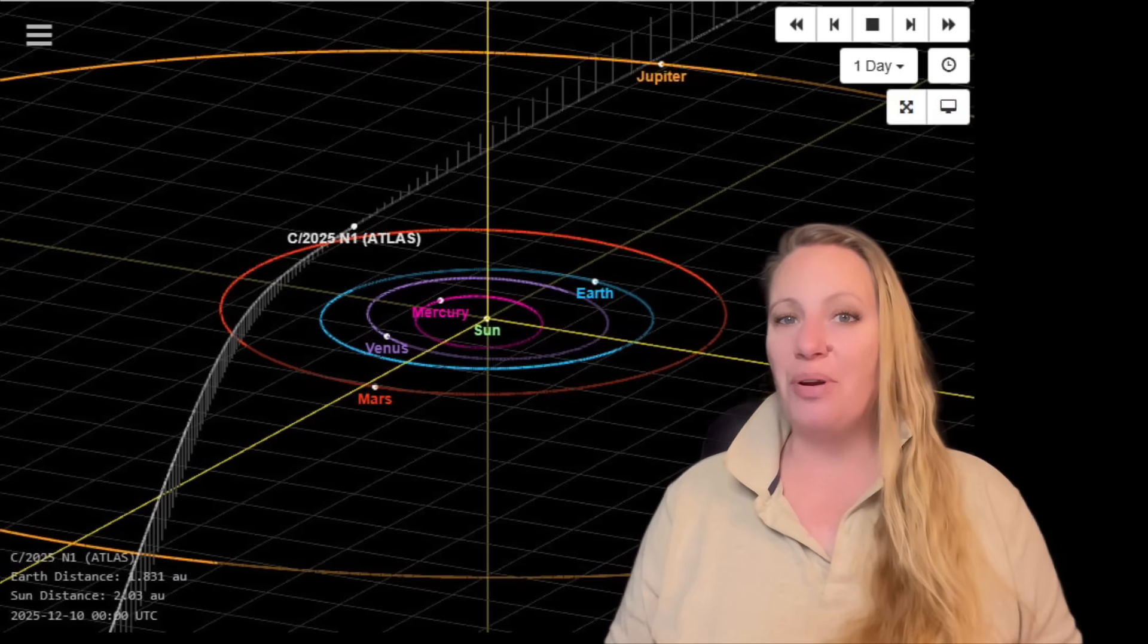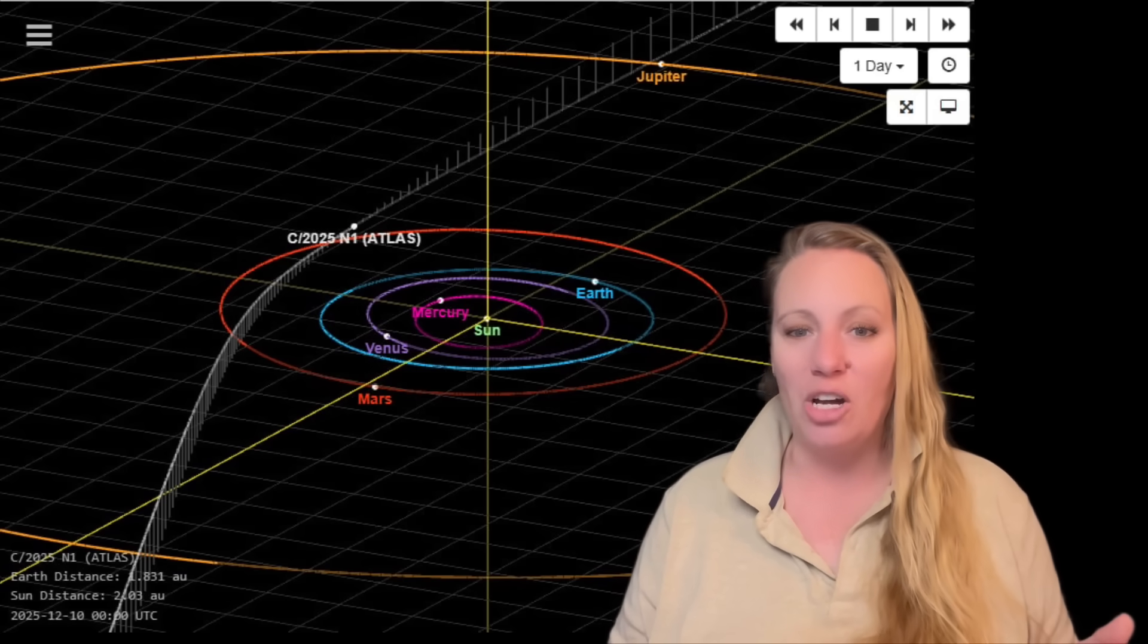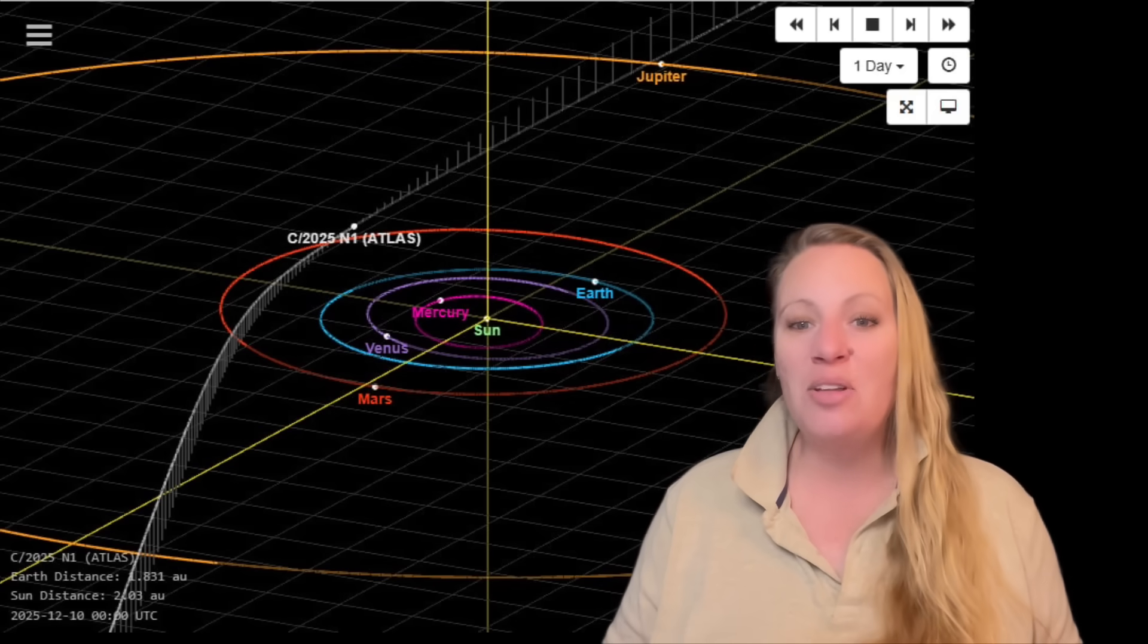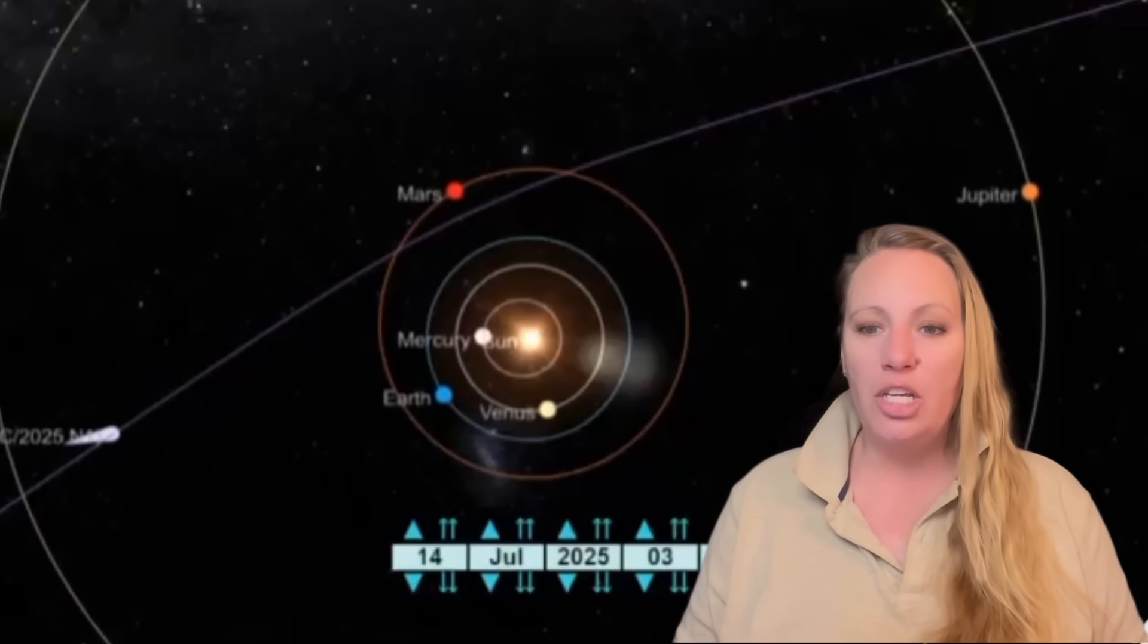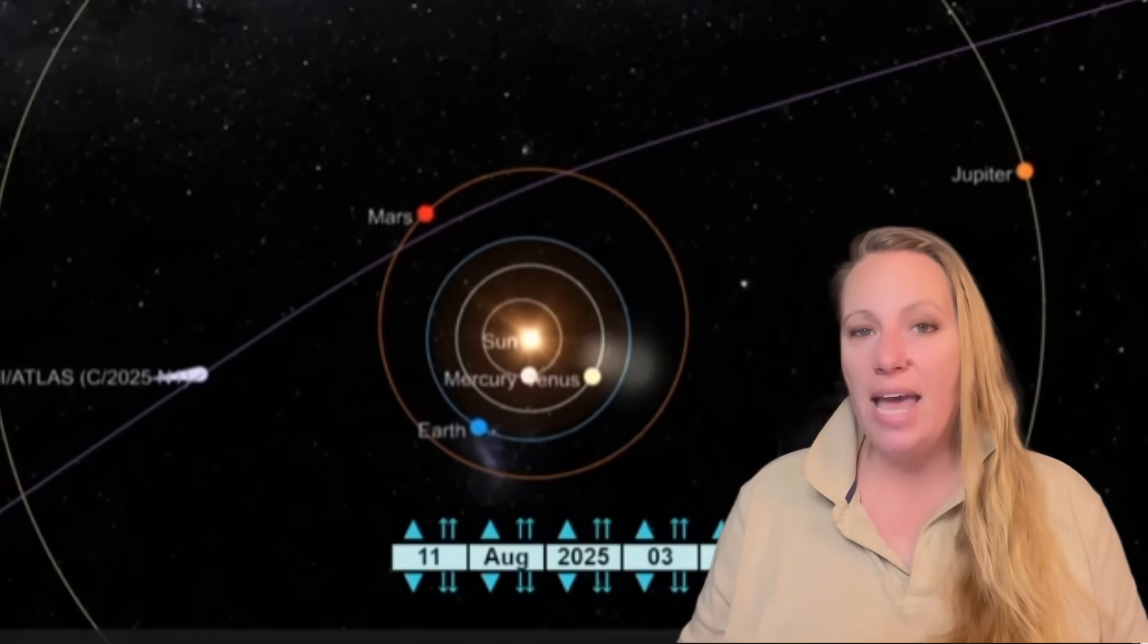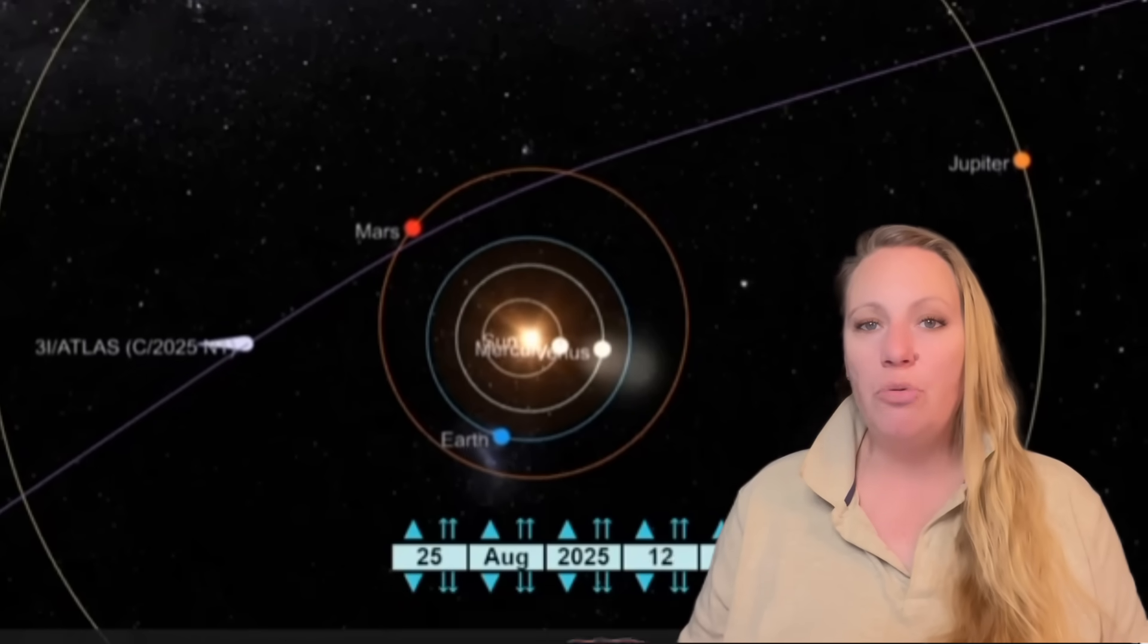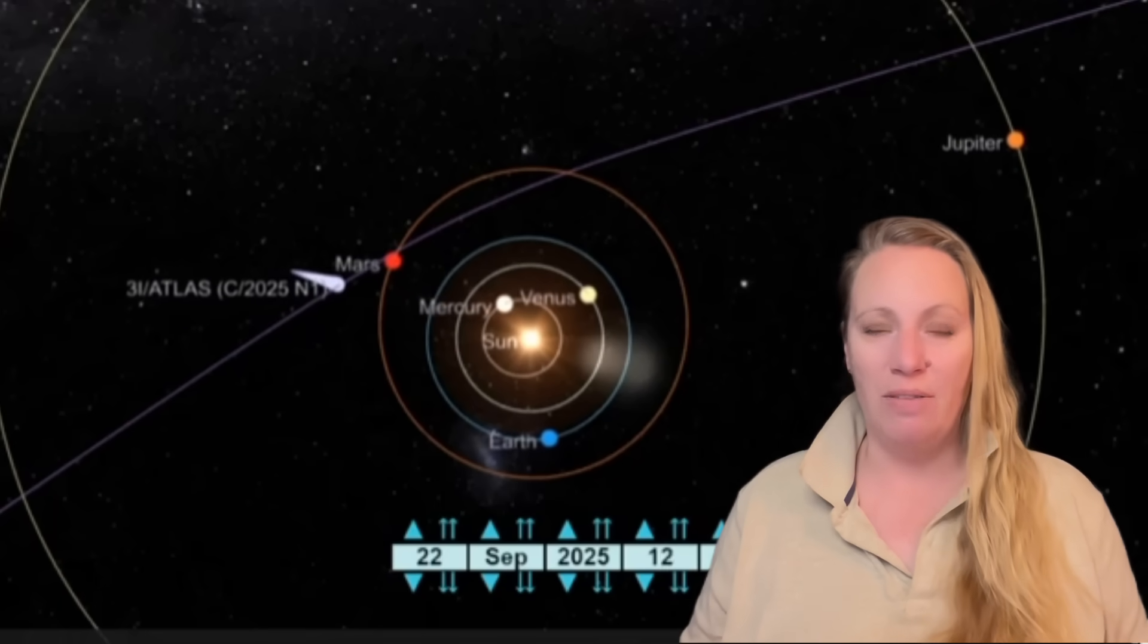The question remains, is this an interstellar visitor that is trying to build a base on Jupiter? So then, let's say it is not, it will continue its journey crossing the orbits of Saturn, Uranus, and Neptune by 2028. And then, if it's natural, it will head out to interstellar space and it will never return.